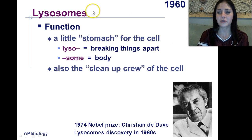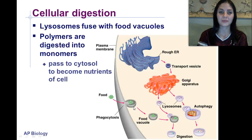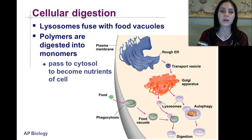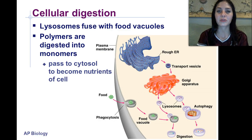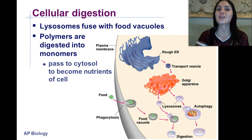Lysosomes were first discovered by Christian de Duve in the 1960s. Lysosomes function by fusing to food vacuoles, where polymers are digested into monomers through the process of hydrolysis — using water to split those polymers into monomers.